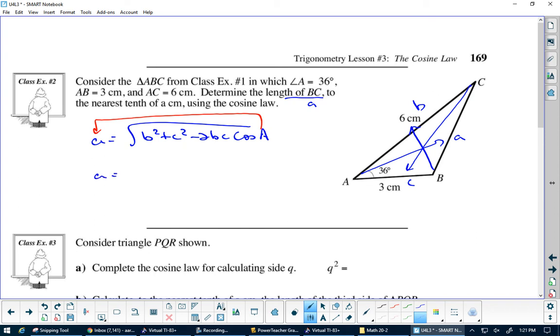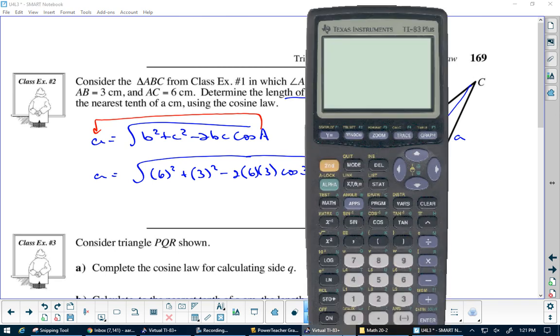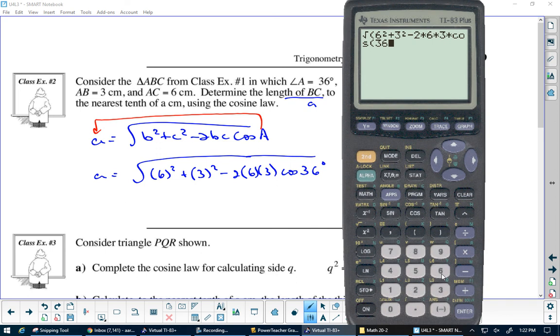Then it's a equals the square root of 6 squared plus 3 squared minus 2 times 6 times 3 times cos 36 degrees. Let's try it. Open my square root, it starts with a bracket: 6 squared plus 3 squared minus 2 times 6 times 3 times cos 36. Shut that, then press enter and I get 3.98, or to the nearest centimeter, 4 centimeters.